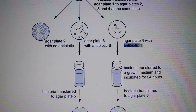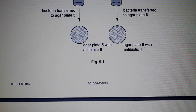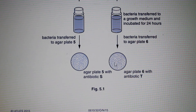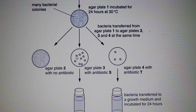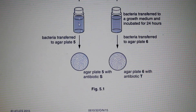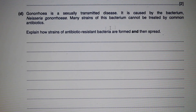The question then asks why many bacterial colonies were found on agar plates 5 and 6. The reason is that the resistant bacteria from plates 3 and 4 were cultured in growth medium and then placed back onto agar plates containing the same antibiotics they are resistant to. Since the antibiotic has no effect on them, these resistant bacteria continued to multiply, resulting in many colonies on plates 5 and 6.